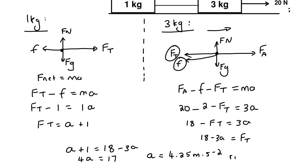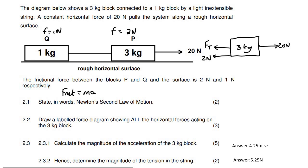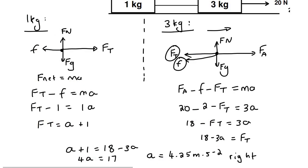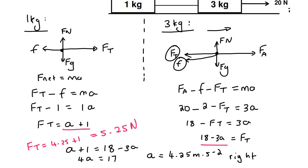To be technically correct, the acceleration is 4.25 m/s² to the right. The last question is to calculate the tension. Now that we've done the simultaneous, finding tension is straightforward — just plug a into either equation. Using F_T equals a plus 1: the tension is 4.25 plus 1, which gives us 5.25 newtons. And there we go — thanks for watching!